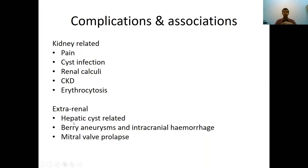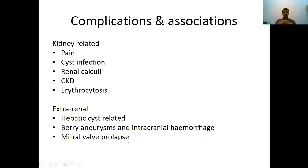These conditions can sometimes be associated with hepatic cysts. This is important to know, especially in short cases — when doing an abdominal examination on a polycystic kidney disease patient, always palpate the liver for hepatomegaly related to hepatic cysts. They can also be associated with berry aneurysms, and patients can develop intracranial hemorrhages. In long cases, ask about family history of cerebrovascular accidents and strokes. They can also be associated with mitral valve prolapse, so you should auscultate the precordium for mitral valvular abnormalities.